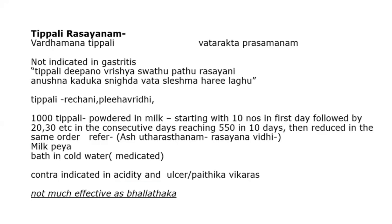Thousand Pippali Vritti — powdered in milk. Starting with that, everyone knows this Pippalivardhamana Prayoga. It is described in Ashtanga. Starting with 10 units on the first day, followed by 20, 30, etc. on consecutive days, reaching 550 in 10 days, then reduced in the same order.